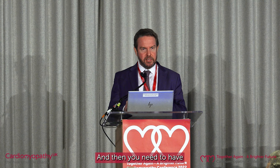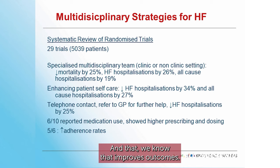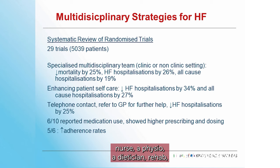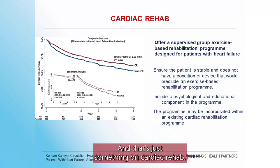You need to be part of a multidisciplinary strategy — a team that looks after you. We know that improves outcomes; people live longer if you have this multidisciplinary team: a heart failure nurse, a physio, a dietitian, rehab — all looking after you holistically. There's data showing your outcomes are probably better if you go through cardiac rehab.